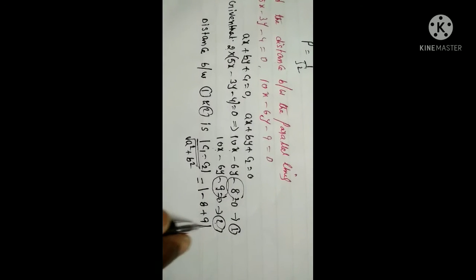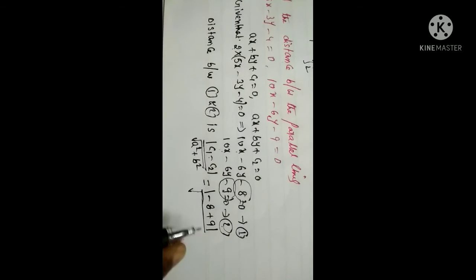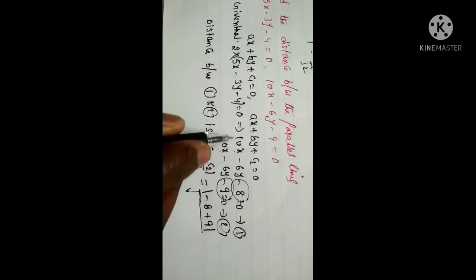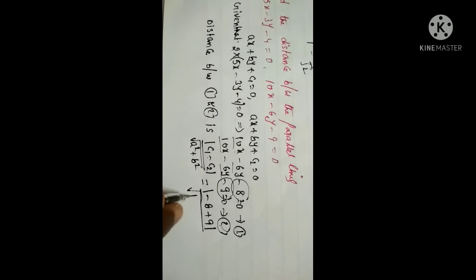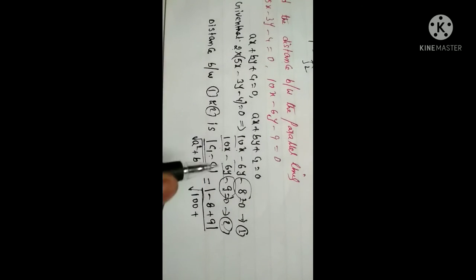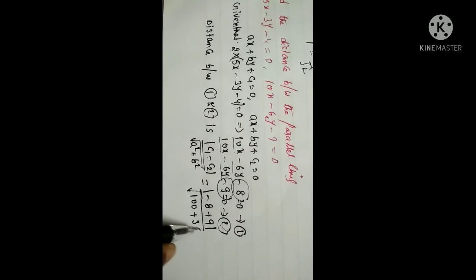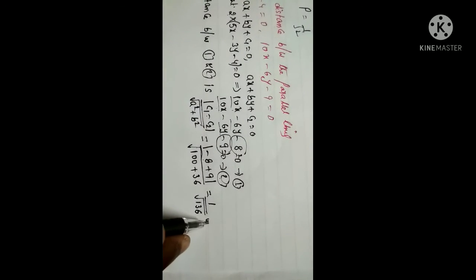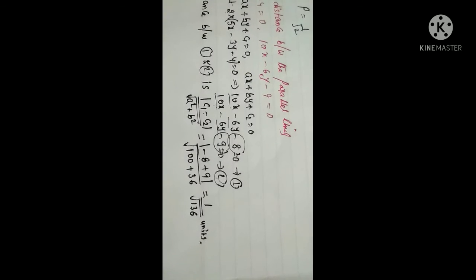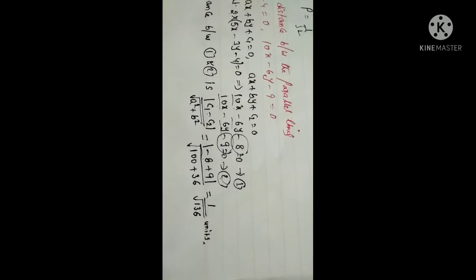Here minus and minus gives plus, so we get plus 9 divided by √(a² + b²). With a equal to 10, a² equals 100, and b equal to minus 6, b² equals 36. So the distance equals mod(minus 8 plus 9) divided by √(100 plus 36), which is 1 divided by √136 units. This is the distance between the parallel lines.